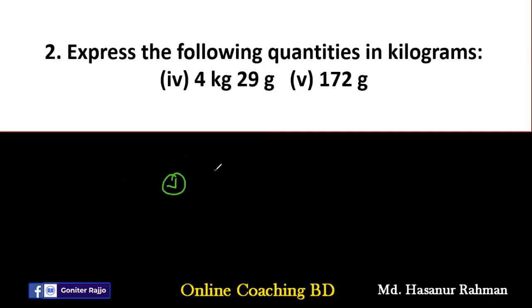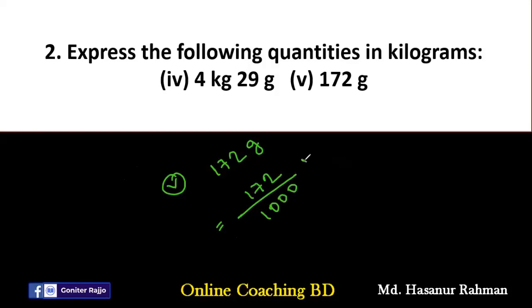Number five: one hundred seventy-two grams. To convert grams to kilograms, we divide one hundred seventy-two by one thousand. The final answer is 0.172 kilograms.